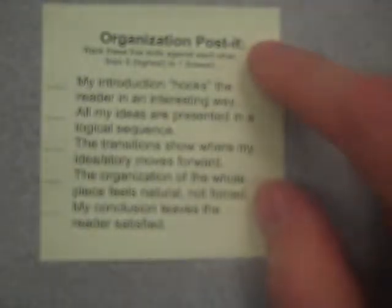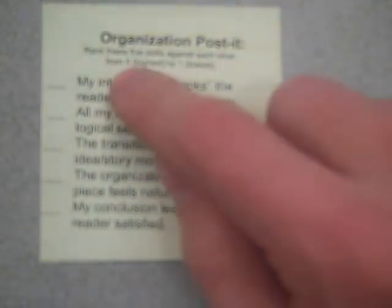Let's go over how to use this organization post-it note. What you need to do is rank these five skills against each other from five, highest, to one, the lowest. What this means is you'll have a five and a one.